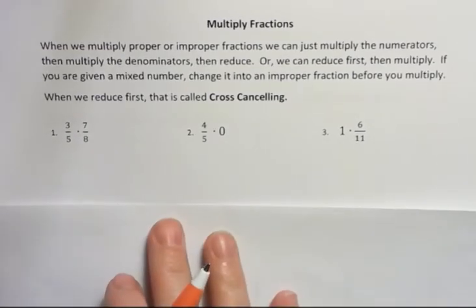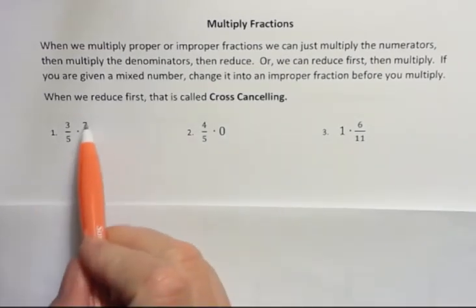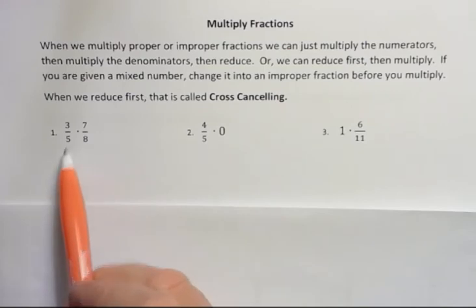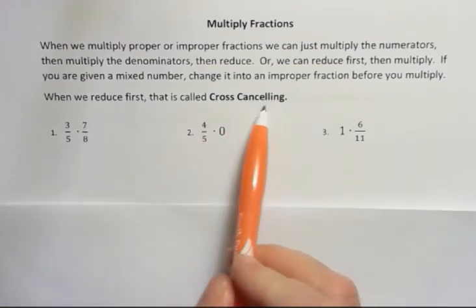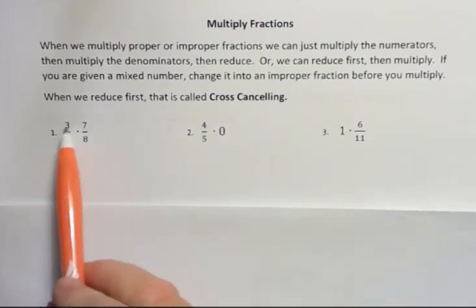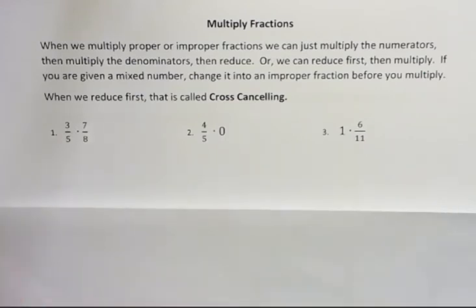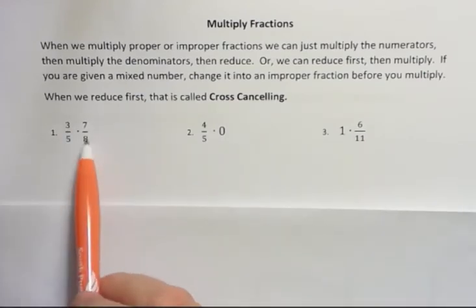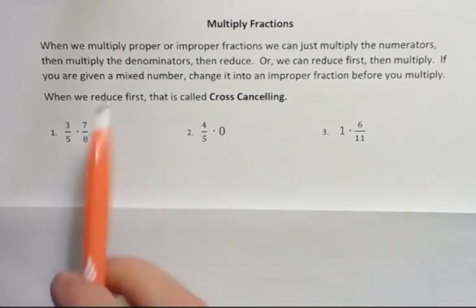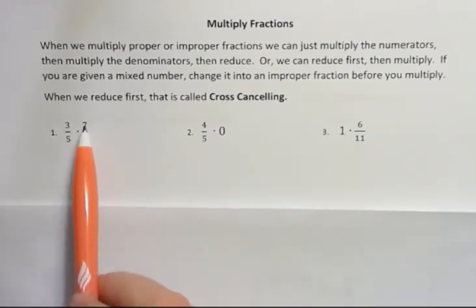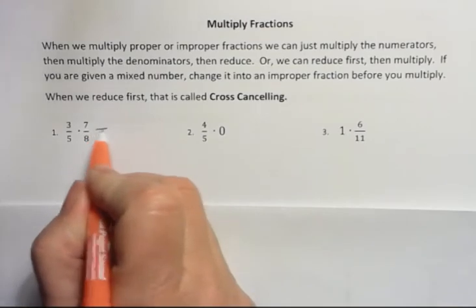In this first fraction problem, 3/5 times 7/8, we can't cancel anything. Cross-canceling, what we do is we look to see what's on the top and what's on the bottom and see if there's anything that we have in common. But there's nothing in common between 3 and 8 or 3 and 5. And there's nothing in common between 7 and 8 or 7 and 5. So we're just going to multiply straight across.